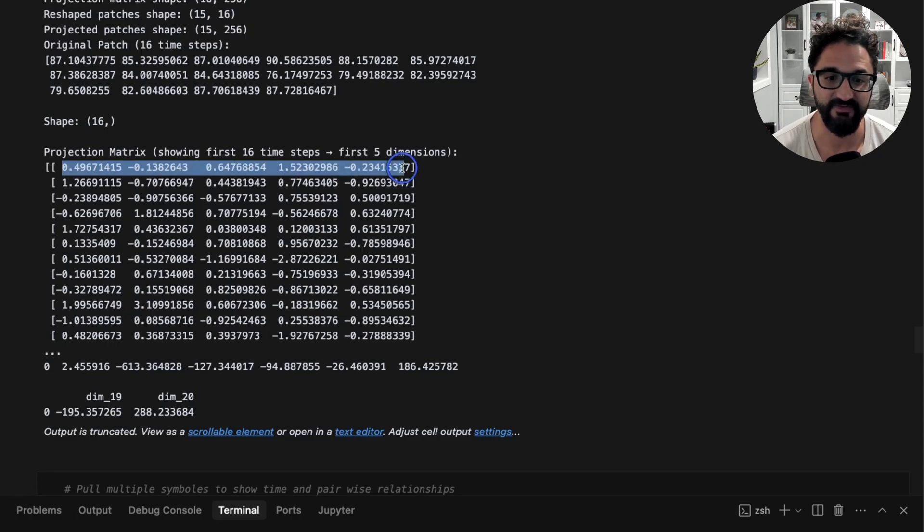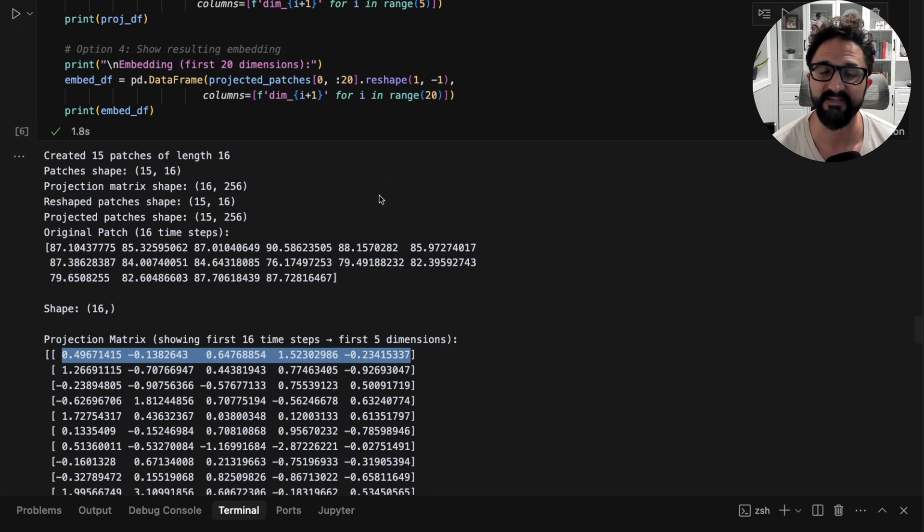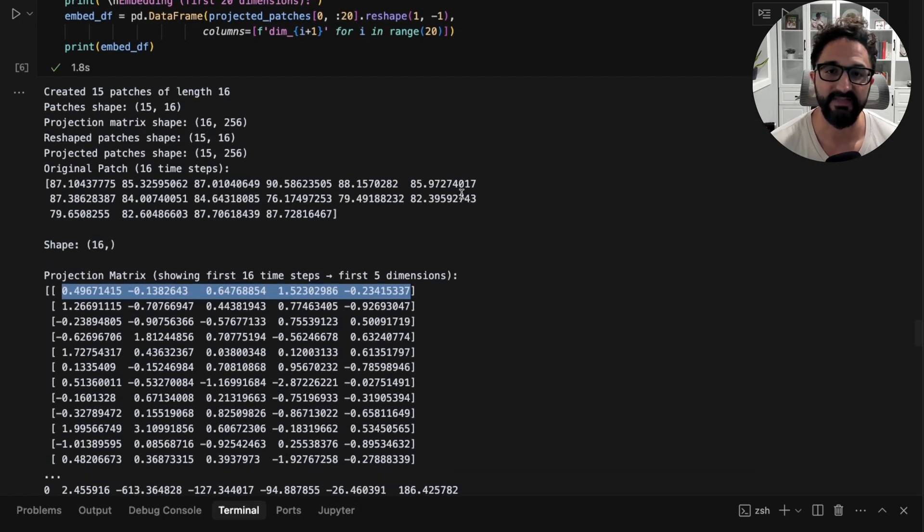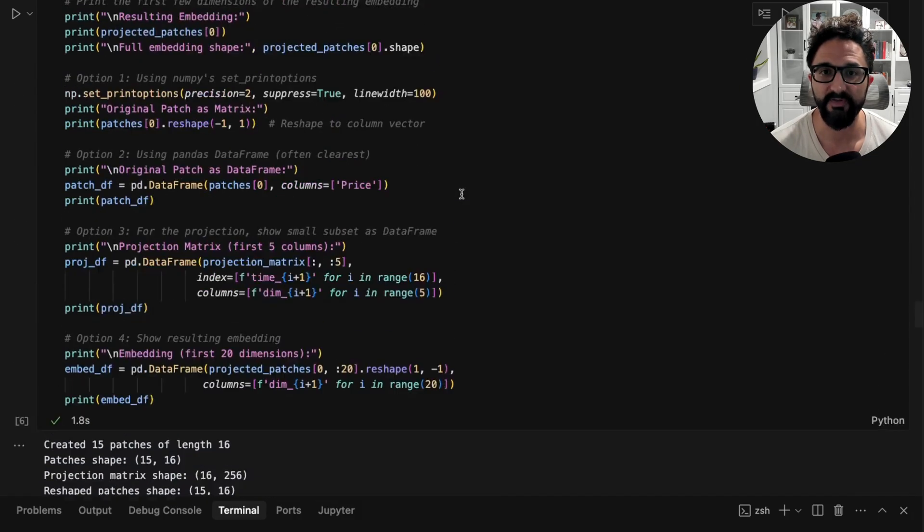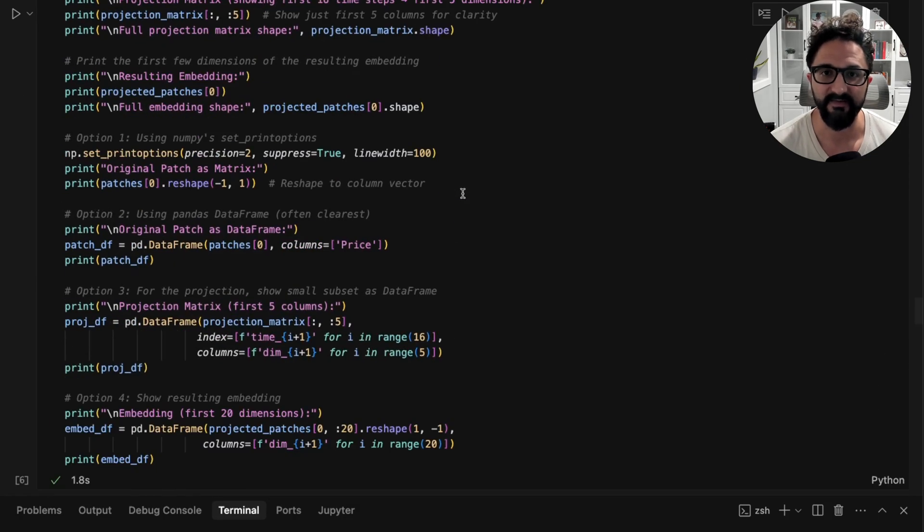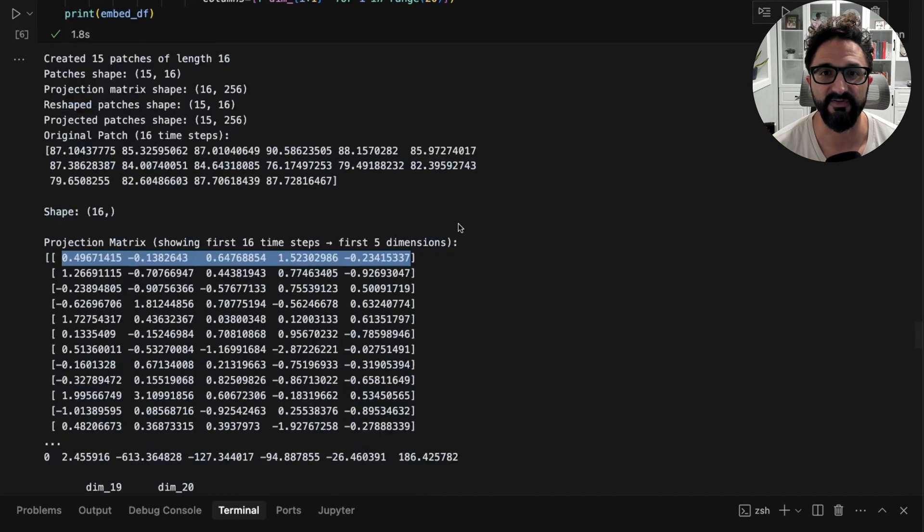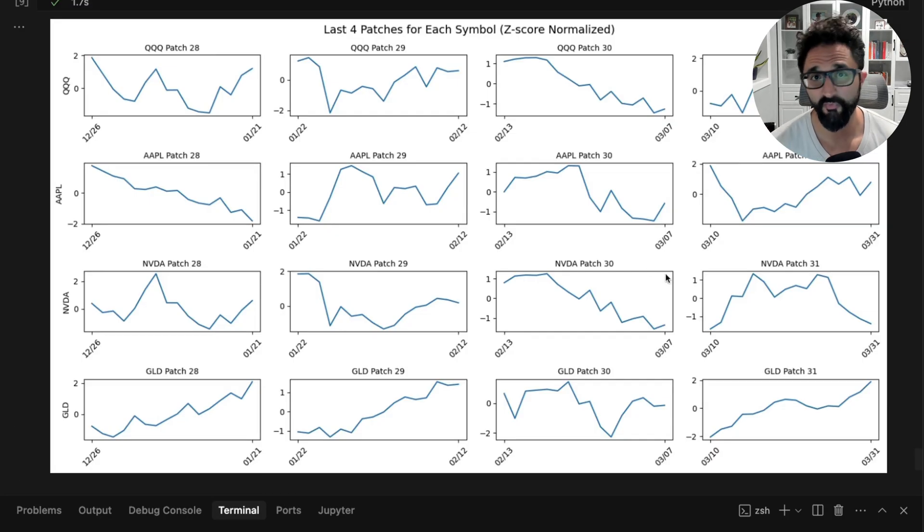Now there are other ways to create embeddings, but this is just what I chose for this example for simplicity's sake—to just randomly use a weight matrix and project here. We create this projection matrix, initialized randomly, and then we project our patches into a higher dimensional space such that we can capture meaning. Here's the first five dimensions for every one of our patches, or rather the first 16 patches. We just have this giant array of numbers.